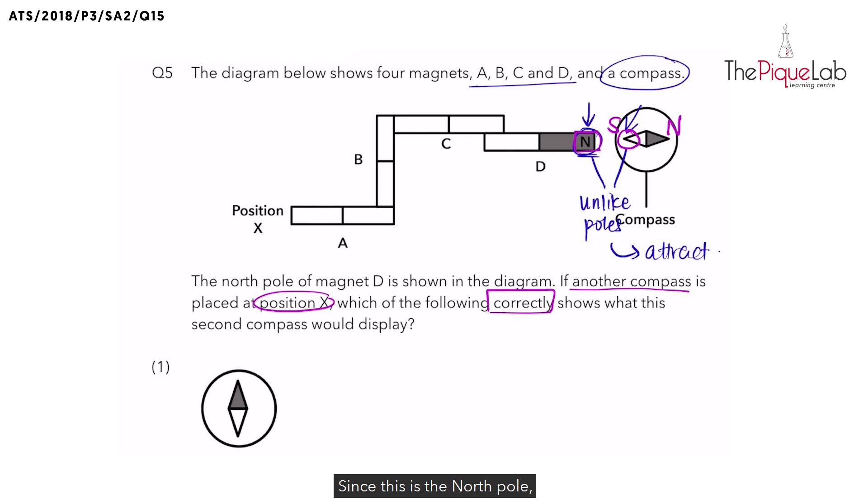Since this is the north pole, the other pole of D should be south and therefore this side should be north. Why? Because north and south are unlike poles and unlike poles attract. And let's continue writing out. This side must be south. And then north, south, north and south.